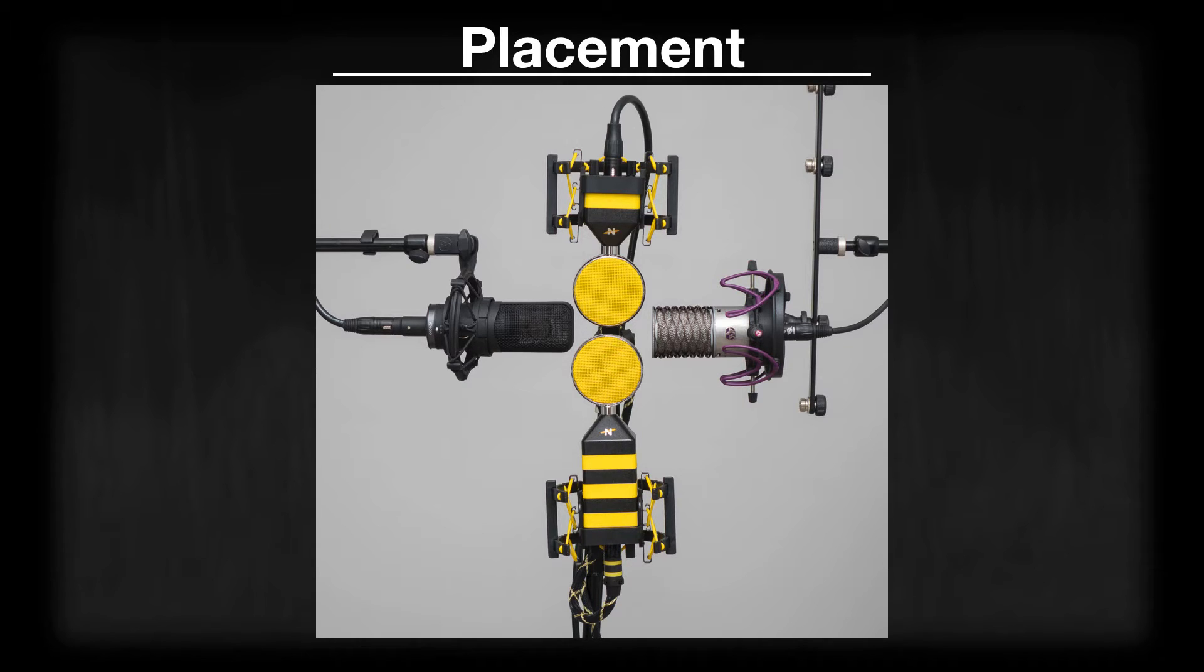All of these microphones have almost a 1 inch diaphragm for their capsules, except for the Worker Bee, which is 0.94 inches, and the King Bee, which is 1.34 inches. So it's quite a bit larger than the others. All of these microphones have a fixed cardioid pickup pattern, with the exception of the Audio-Technica, which was placed in cardioid mode for this test, but does have multiple patterns.